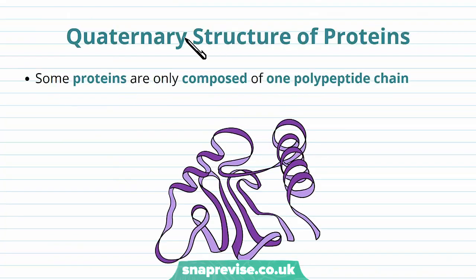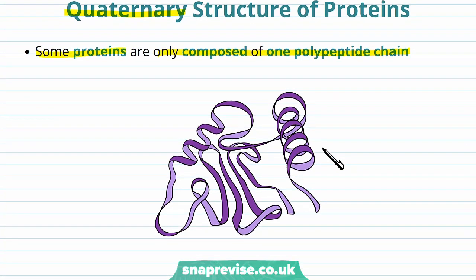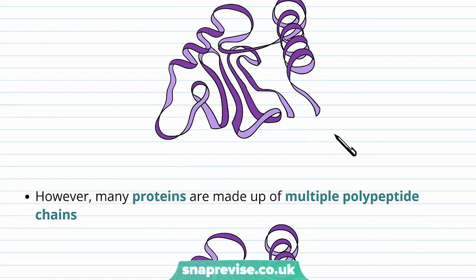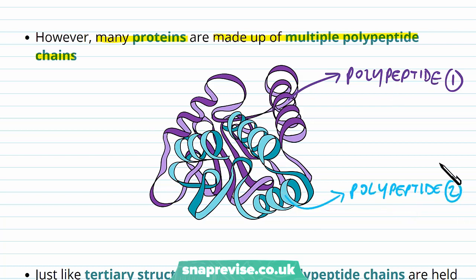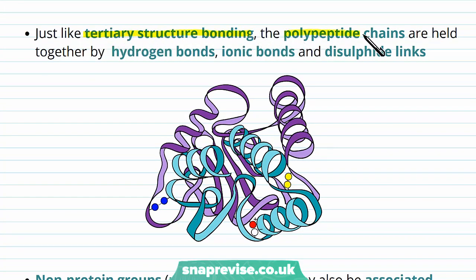The next level and the final level of structure for proteins is called the quaternary structure. Some proteins are only composed of one polypeptide chain — once that polypeptide chain is made up and folded, that's it, the protein is finished. But many proteins in the cells are made up of multiple polypeptide chains interacting together. So here we have a protein where we've got the purple polypeptide, polypeptide number 1, interacting with a second polypeptide, this blue one, polypeptide number 2. The protein can't work until these two come together. Just like with tertiary structure bonding, the polypeptide chains are held together by hydrogen bonds, ionic bonds, and disulfide links.